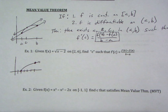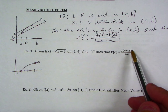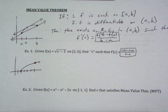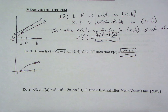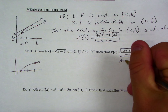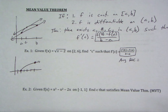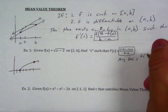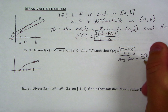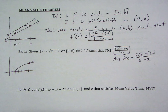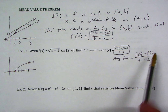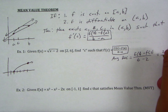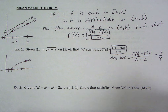We have to find two things: the average rate of change and the derivative — order doesn't matter. Starting with the average rate of change: f of 6 minus f of 2 over 6 minus 2, which gives us 2 minus 0 over 4. So the average rate of change over that interval is 1/2.